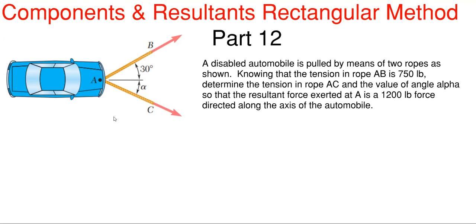So what we're going to be going over today is components and resultants. We are going to be doing the problems shown on the screen. This will be our 12th part in this series. What we have going on here is we have a disabled automobile that is pulled by means of two ropes as shown. Knowing that the tension in rope AB is 750 pounds, determine the tension in rope AC and the value of the angle alpha so that the resultant force exerted at A is a 1200 pound force directed along the axis of the automobile.